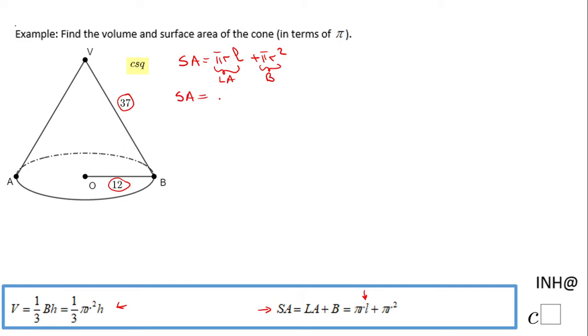In this case we're gonna have π times the radius (which is 12) and the slant height ℓ is 37, plus πr² and again radius is 12. So we're going to do some simplification here: 12 times 37, that is 444π plus 12 squared is 144, so 144π. The last thing we can do here is to combine these two like terms and that will be 588π.